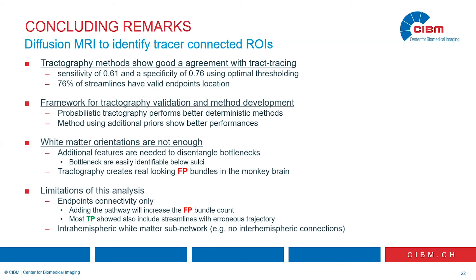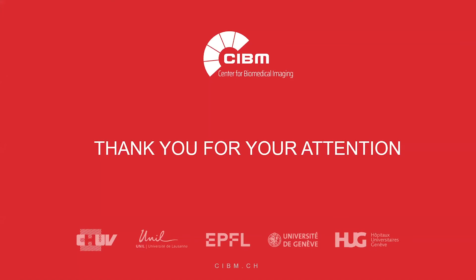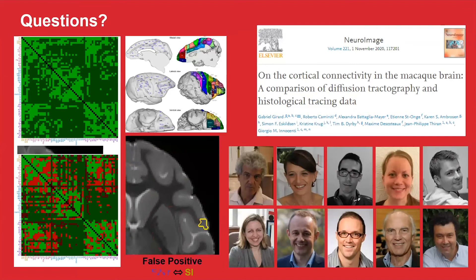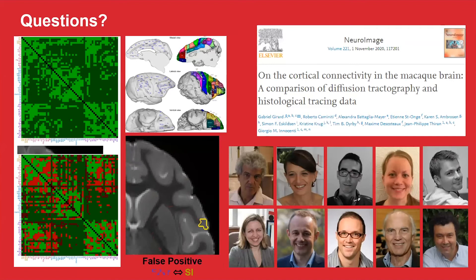Some limitations of this analysis: first, we study endpoint connectivity only — including the whole trajectory would likely increase the false positive bundle count. Moreover, most of the true positives we found also had a few streamlines with erroneous trajectories that could potentially form invalid bundles. Finally, we focused on a large network limited to one hemisphere, which does not include the corpus callosum — perhaps the biggest bottleneck in the brain — so this may be a slightly easier subnetwork than whole-brain connectivity estimation. On this note, I'd like to thank you for your attention and I'm happy to take questions.